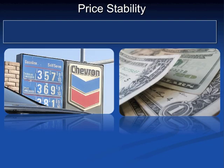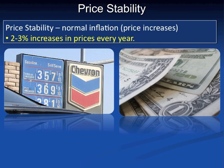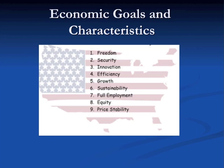When we talk about price stability, we're referring to normal levels of inflation — around two to three percent increase in price level every year in the United States. It would be undesirable to have high inflation or hyperinflation, which would create instability in economic markets. Price stability means keeping prices relatively stable with a small amount of healthy inflation from year to year. Those are the economic goals and characteristics in a nutshell, and they're helpful in creating a distinction between each of the economic systems.